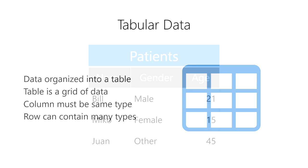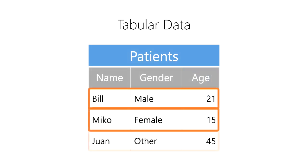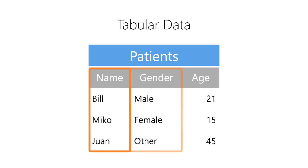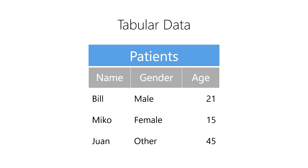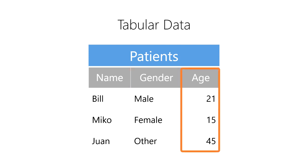For example, imagine we have a table of patients at a hospital. We'd have a set of rows, one for each patient, and a set of columns, one for each attribute of the patient. Each element of data in a column must be the same data type. For example, all of the names must be character strings, all of the genders must be an enumeration of male, female, or other genders, and all of the ages must be integers.